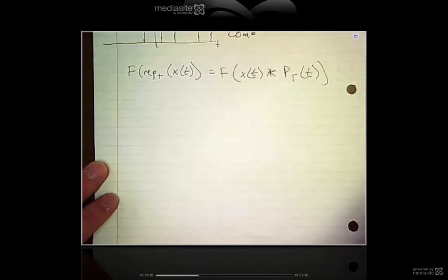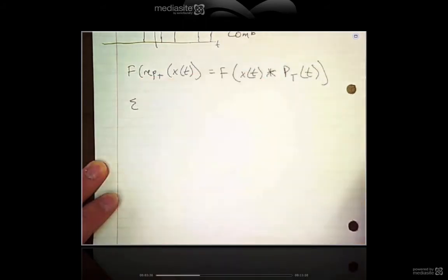We're going to find the Fourier transform of an impulse train first, because that's going to be important for both the rep and the comb.